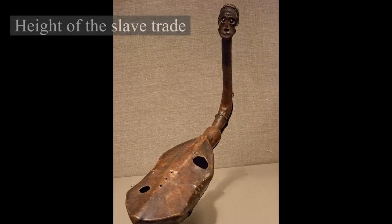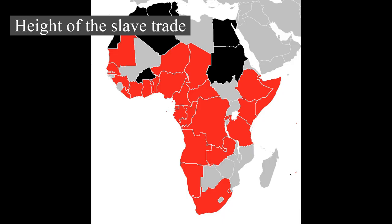Height of the Slave Trade: Slavery had long been practiced in Africa. Between the 15th and the 19th centuries, the Atlantic slave trade took an estimated 7–12 million slaves to the New World. In addition, more than 1 million Europeans were captured by Barbary pirates and sold as slaves in North Africa between the 16th and 19th centuries.